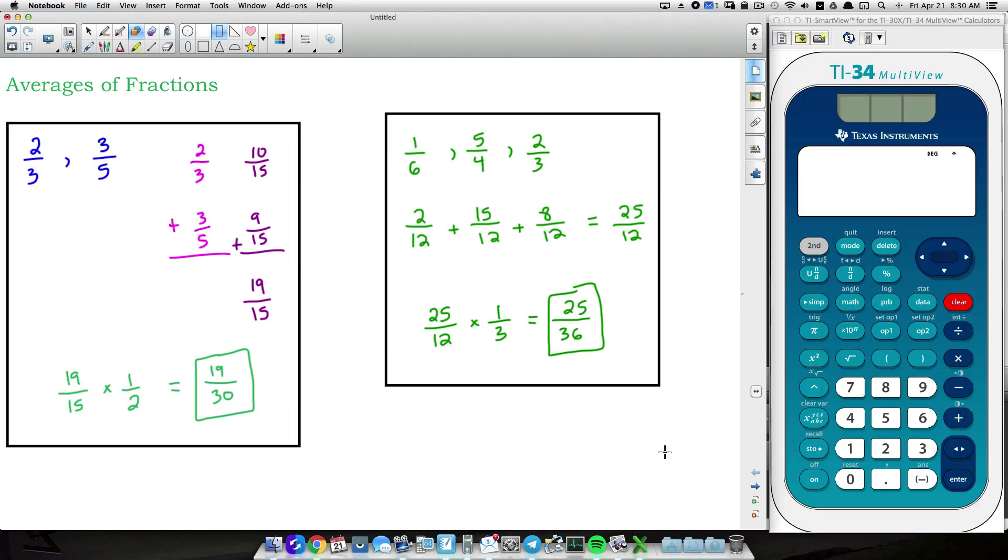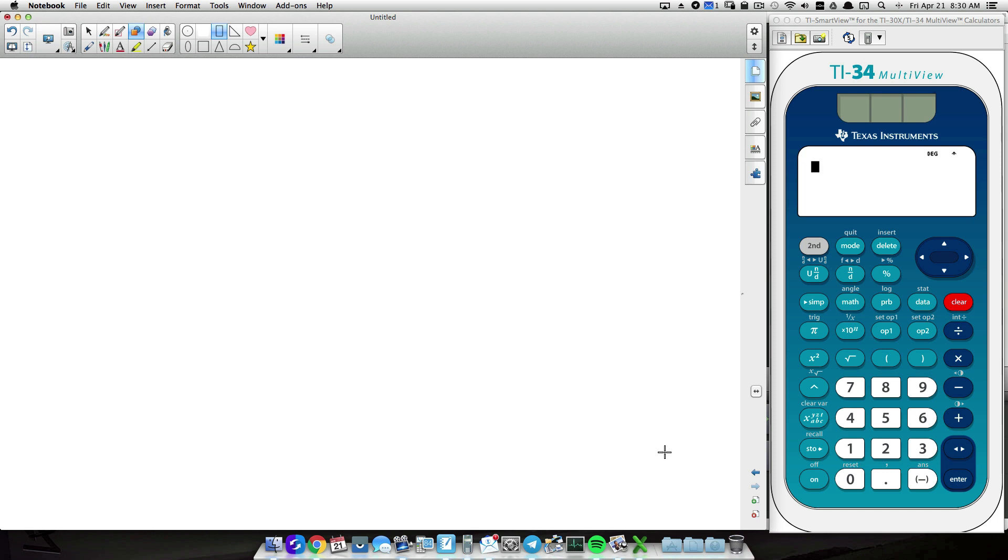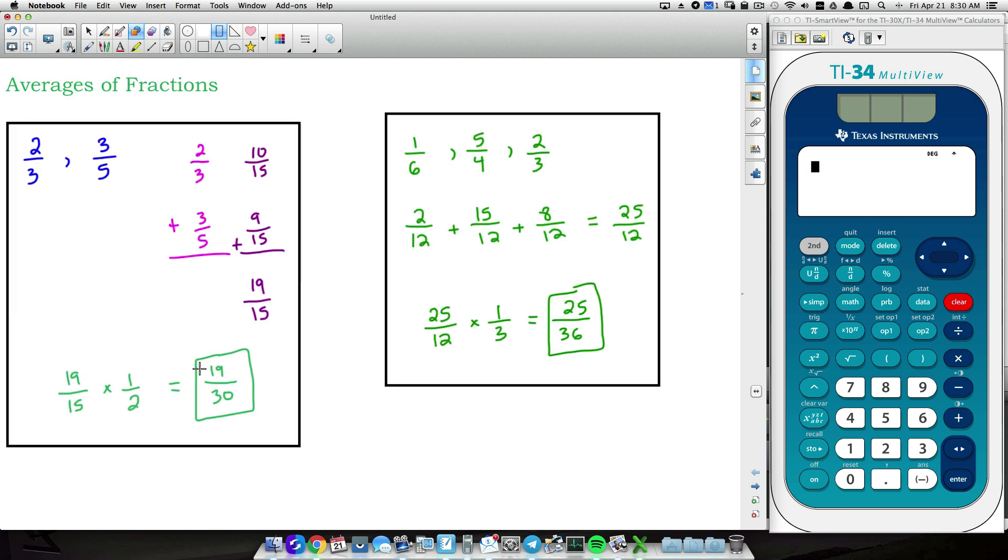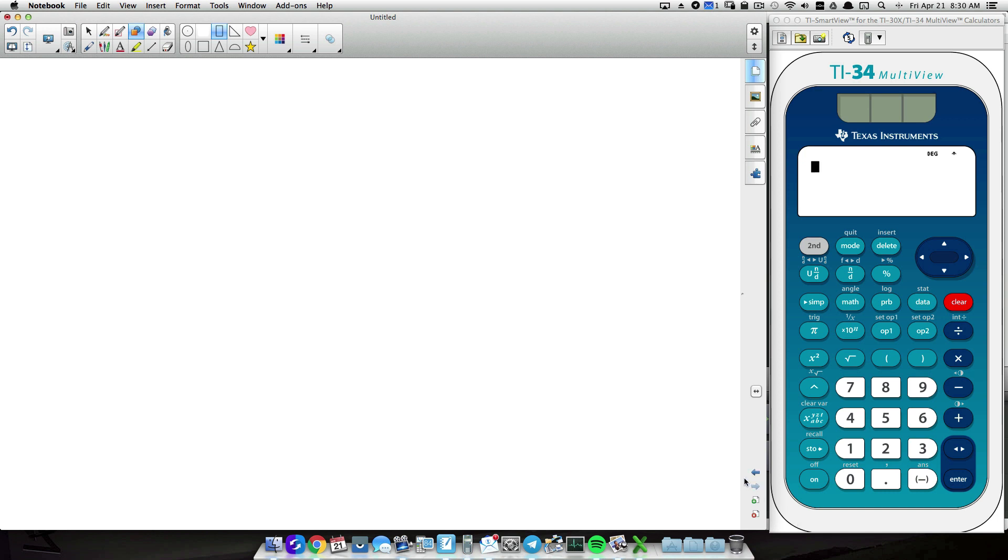And now, finally, one more example here. What we're going to do now is maybe get an average that is not going to be a proper fraction. Because notice both of these, we have a smaller number over a bigger number, smaller number over a bigger number. So let's look at one where maybe we don't get a smaller over a bigger, where our average is going to be an improper fraction. Totally fine for that to happen. But for that to happen, I'm just going to use three improper fractions. Let's do four. Let's do four fractions.